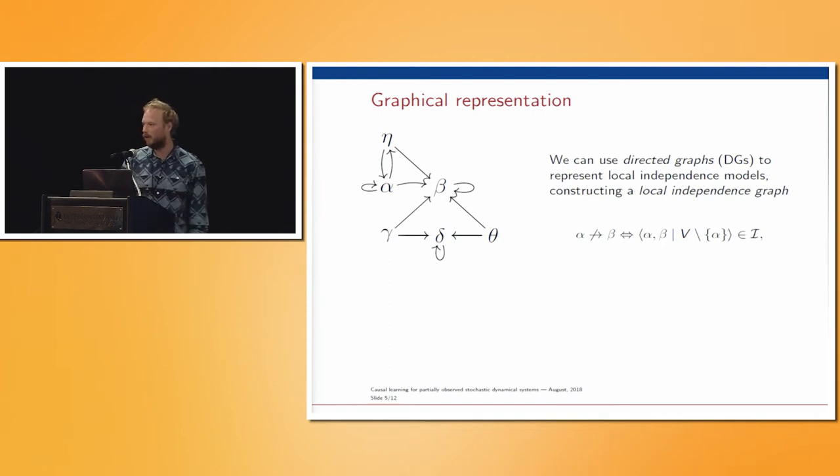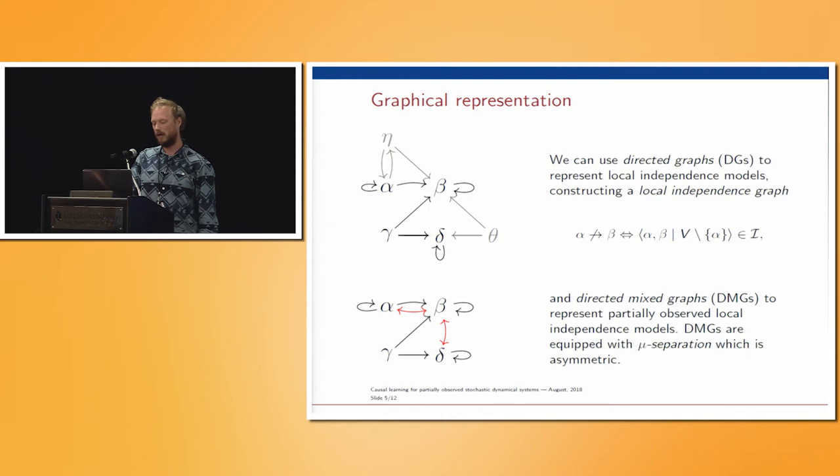In the title I also promised something about partial observation, so we need some kind of graphical marginalization. This is done exactly as in other classes of graphs using latent projection. Let's say that I now don't observe eta and theta in the top graph. I can use this latent projection to get a graph which encodes the independence structure over the observed variables. Please remember that each node is identified to a coordinate process, so each node represents the entirety of a coordinate process.